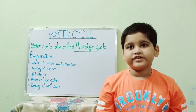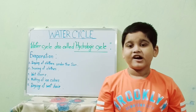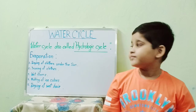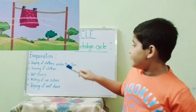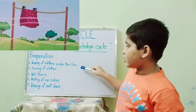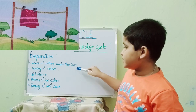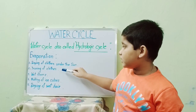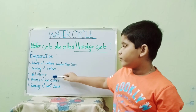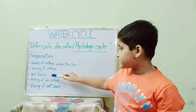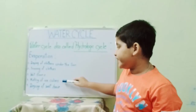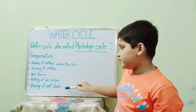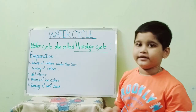Some common real-life examples of evaporation are: 1. Drying of clothes under the sun. 2. Ironing of clothes. 3. Wet floors. 4. Melting of ice cubes. 5. Drying of wet hair.